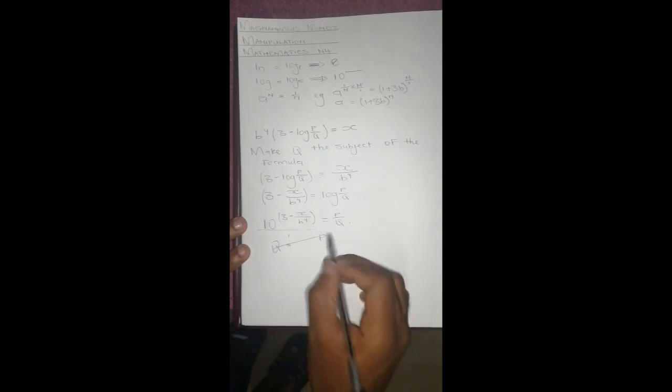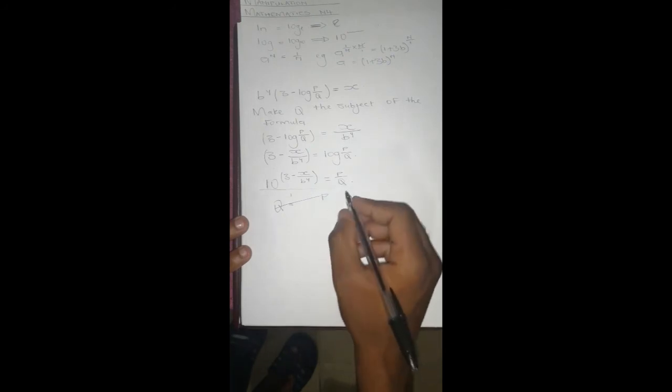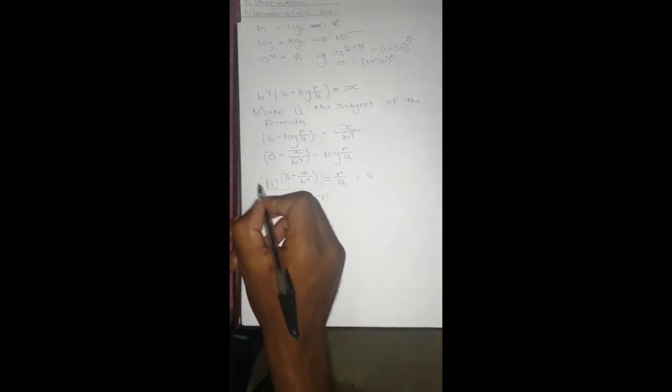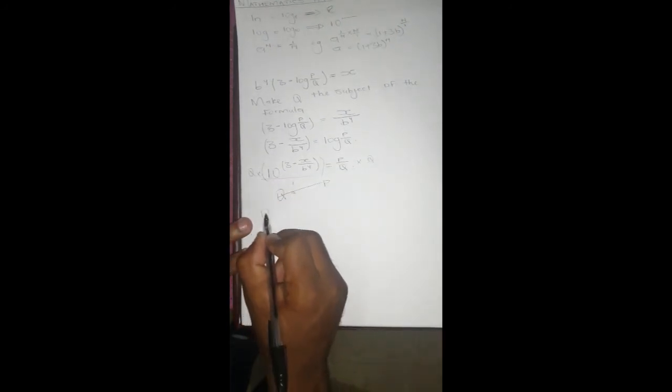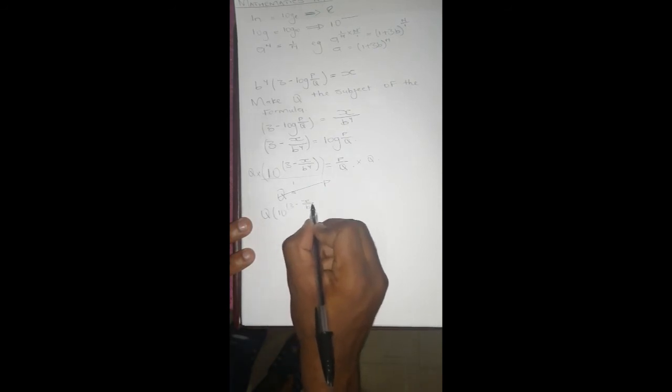Actually, let's not cross multiply. Let's just multiply both sides by q. So we're going to say times q, and this side times q. Then it's going to be q into 10 to the power 3 minus x over b to the power y equals to p.